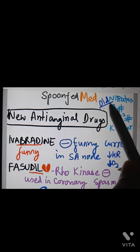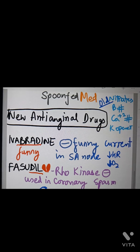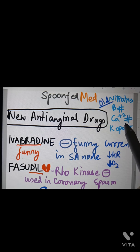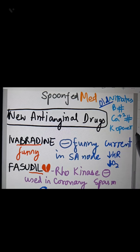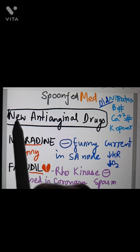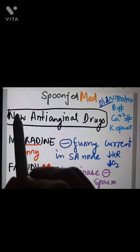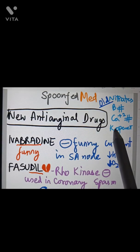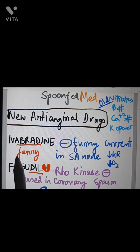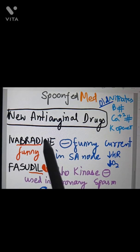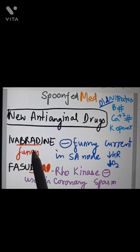We know the old anti-anginal drugs are the nitrates, the beta blockers, calcium blockers, and the potassium openers. However, in the exams we are mainly asked about the new anti-anginal drugs.